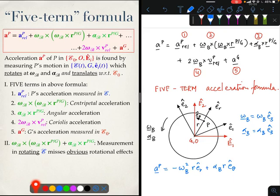But now let us say I wanted to use the five-term formula. What will I see? If I want to use the five-term formula, I should immediately notice that if I was sitting in the BFCS, then point P will look to be stationary.